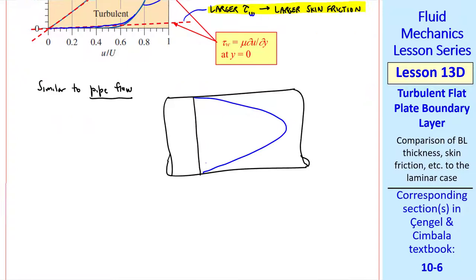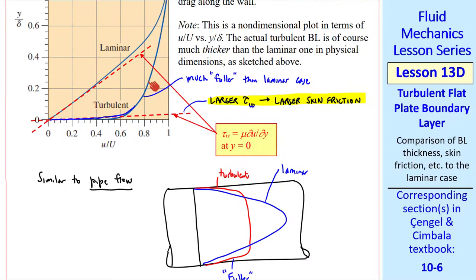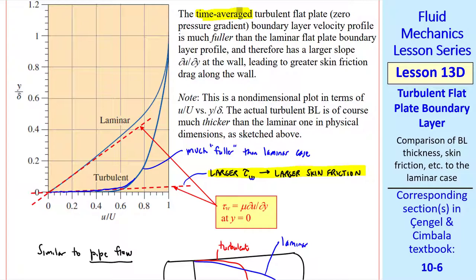We've seen this fuller profile before. In a previous lesson we talked about pipe flow, where we compared the laminar profile to the turbulent profile for the same flow rate, and we had remarked that this is fuller. Keep in mind that for pipe flow and for boundary layer flow, these turbulent profiles are time averaged, since the actual flow is quite unsteady.